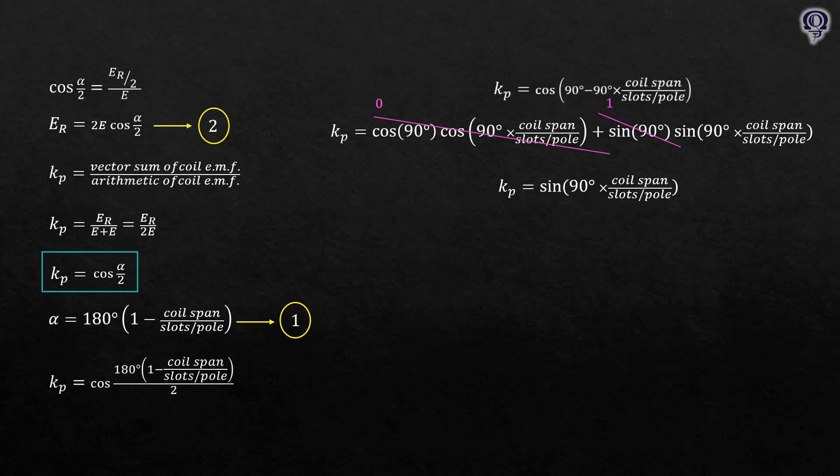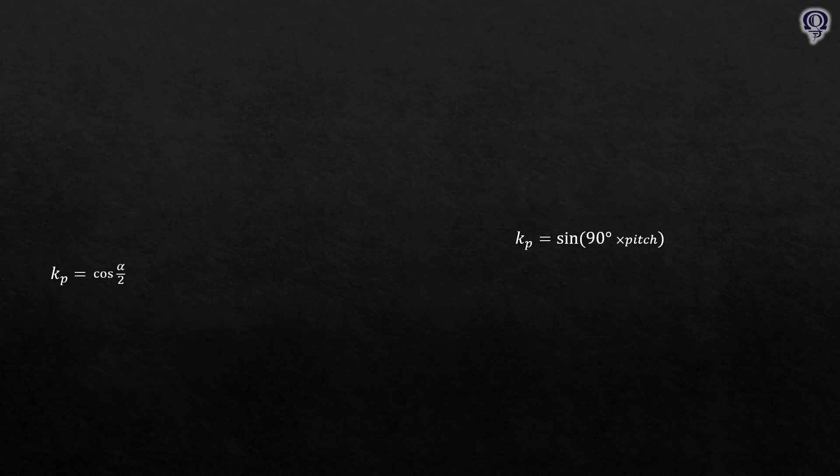Coil span per slots per pole is also the pitch of a generator. We also know that the slots per pole is equivalent to 180 degrees. So Kp can further be simplified into sine of coil span over 2, where coil span is measured in electrical degrees. And that's it, derivation success!